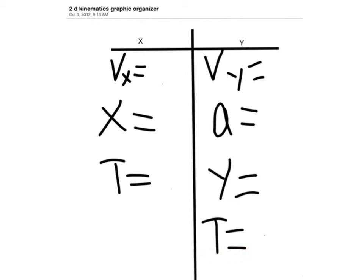Some things that will almost always work are the times will obviously have to be the same on the X and the Y. So if you can find the time in the Y first in most cases, then you just simply put it into the X. Also, your acceleration due to gravity is almost always negative 9.8 meters per second.